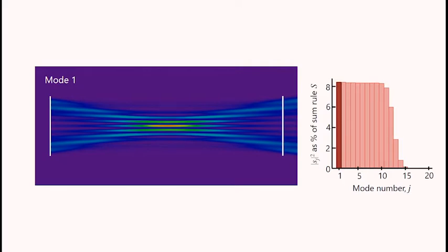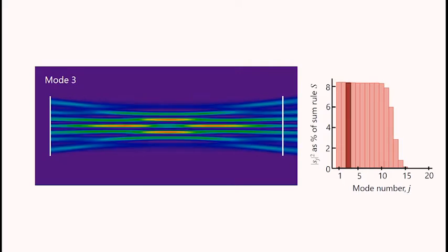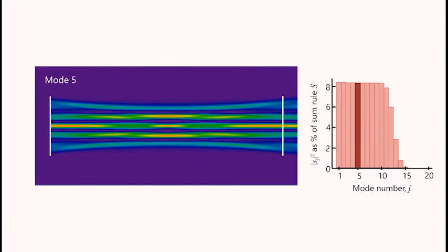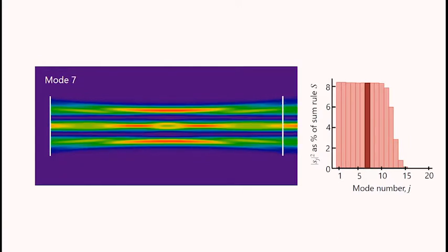The next one, mode 3, also takes a rather similar fraction of the sum rule. The next one, similarly. Mode 7, mode 9.